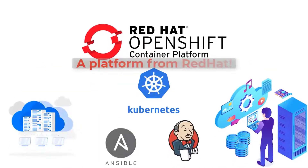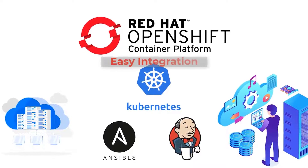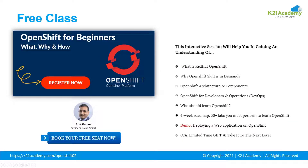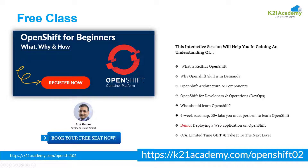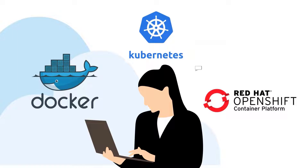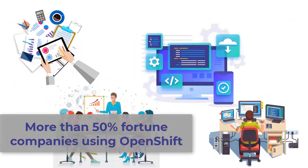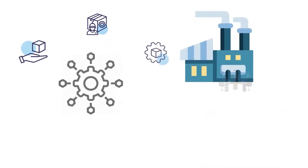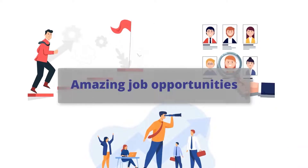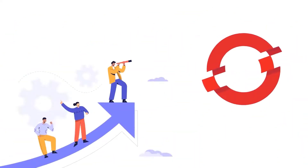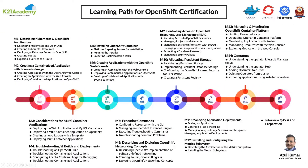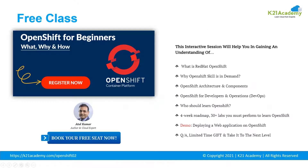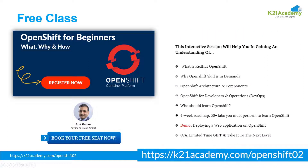I hope you liked this short video and it sparked your interest in learning more about OpenShift — a platform from Red Hat powered by Kubernetes, with easy integration with DevOps tools like Ansible and Jenkins. To know more, register for our free class at k21academy.com/openshift02, where our Docker, Kubernetes, and OpenShift experts will cover why more than 50% of Fortune 100 companies use OpenShift for microservices and containerized applications, job opportunities, salary potential, OpenShift architecture and components, an eight-week roadmap, and 30+ hands-on labs. There's also a limited-time gift for action takers, so register for the two-hour free class at k21academy.com/openshift02.